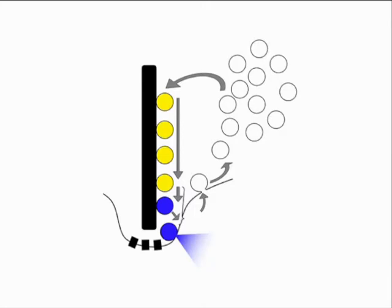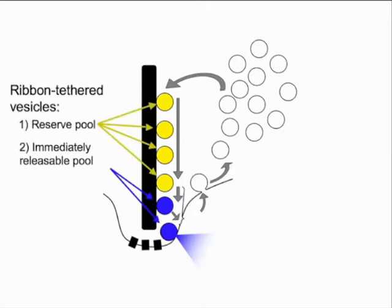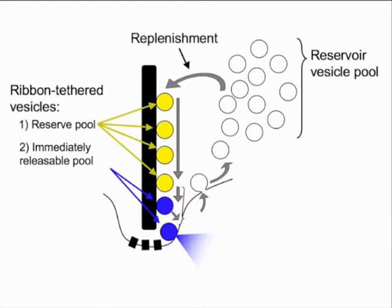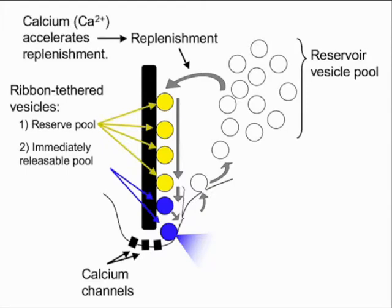There are two functionally distinct vesicle pools tethered to the ribbon, and the ribbon is replenished from a reservoir pool located in the cytoplasm. Exocytosis is triggered by calcium influx through L-type calcium channels, which are located at the base of the ribbon. In addition to triggering exocytosis, calcium appears to accelerate the resupply of vesicles to the ribbon.